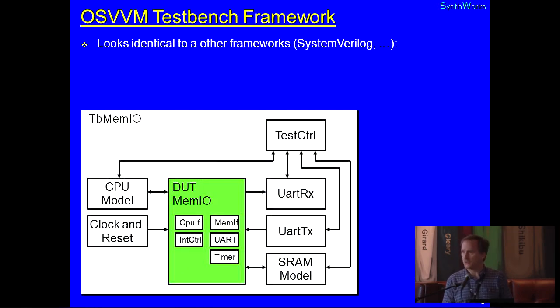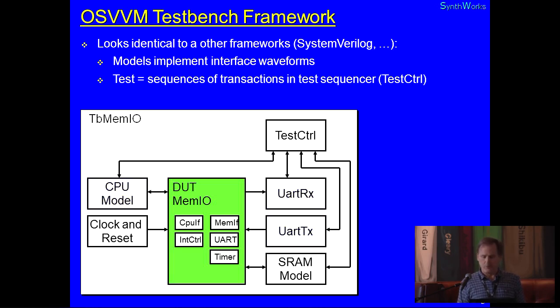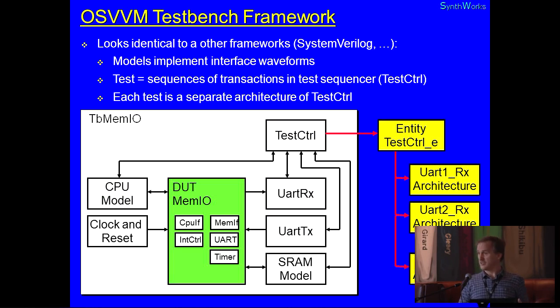So our framework, it looks just like any other framework. We use models. We use verification components, just like most other approaches do. We have a test sequencer, and different architectures of that test sequencer implement the different tests. System Verilog introduces this to you via OO, via factory classes. Well, we've had that since 87 with architectures in VHDL. It's not a new thing. You do not need OO to do this in VHDL.